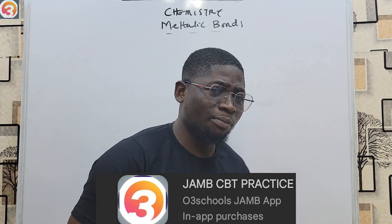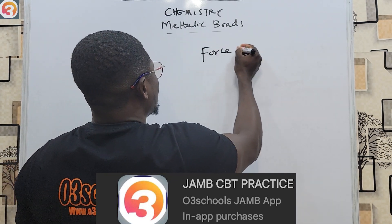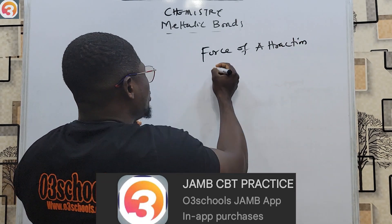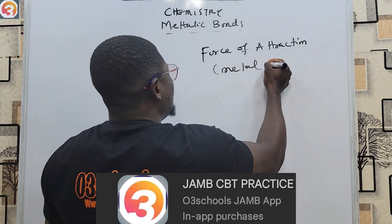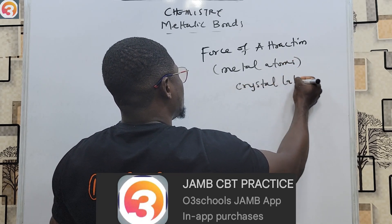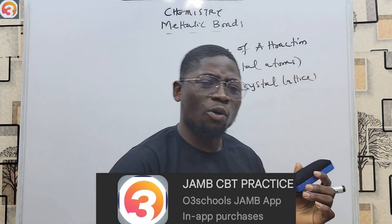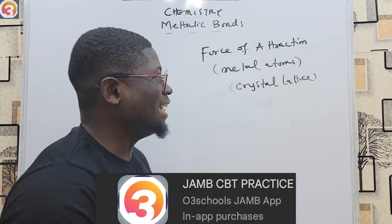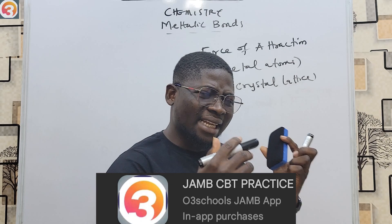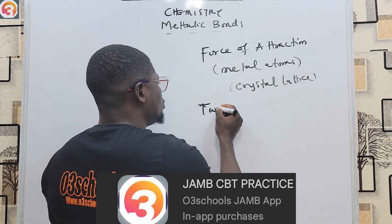Metallic bond is the force of attraction that holds metal atoms together in a crystal lattice. So metallic bond is the force of attraction that holds metal atoms together in a crystal lattice. The force of attraction in a metallic bond is an attraction between two metals.